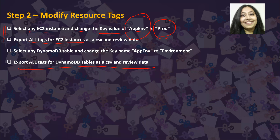We have now completed all of these steps. We saw how to create tags and associate them with resources, how to modify tag values, and how to modify a tag key — the only way to do so is to delete the existing key and recreate the tag with the new key and value. We also saw how to export tag data for a specific resource or resource type.